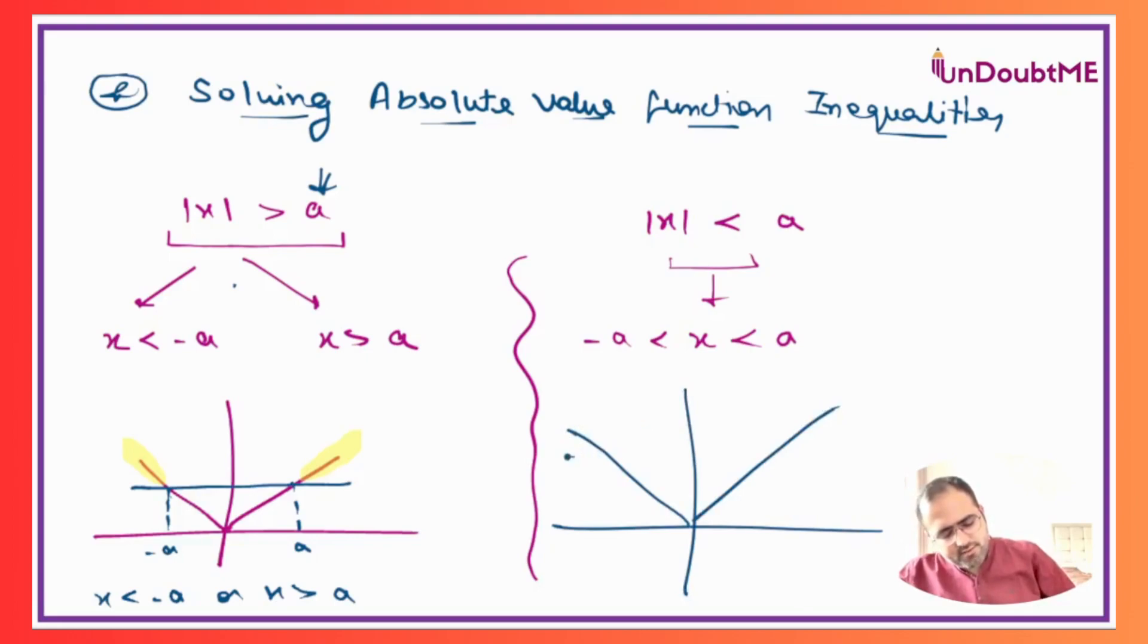If we have this as a, then these values will be minus a and plus a, and we are looking for |x| less than a. Less than a means this is the portion what we are talking about. So it is very clearly understood that this is applicable for x greater than minus a and less than a.